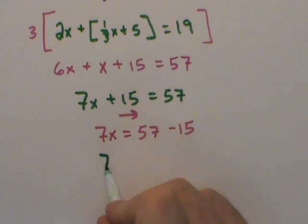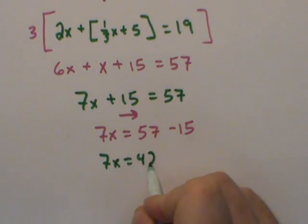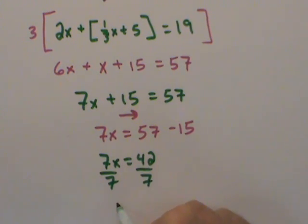So I have seven x equaling forty-two. I divide by seven, and it looks like x will be six.